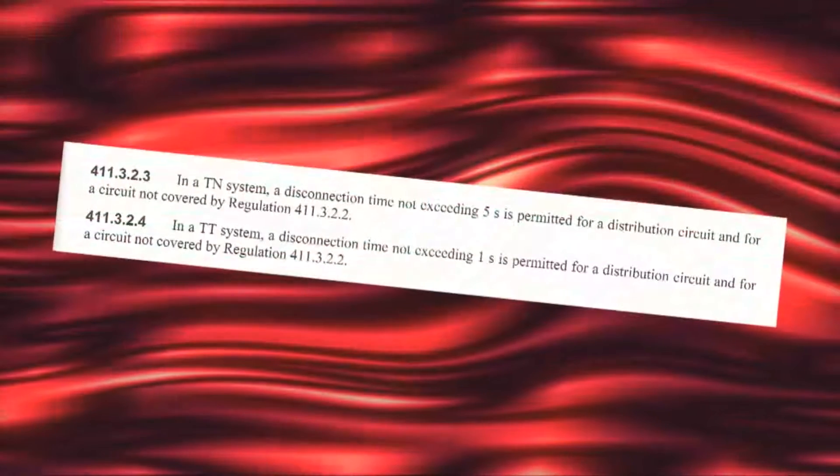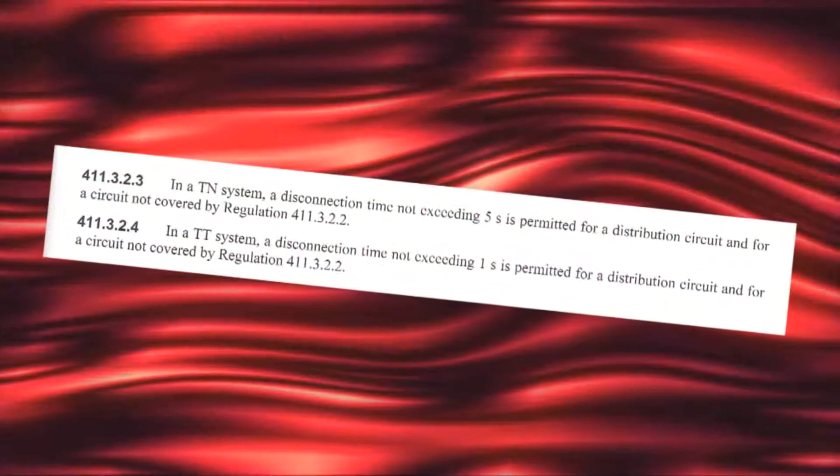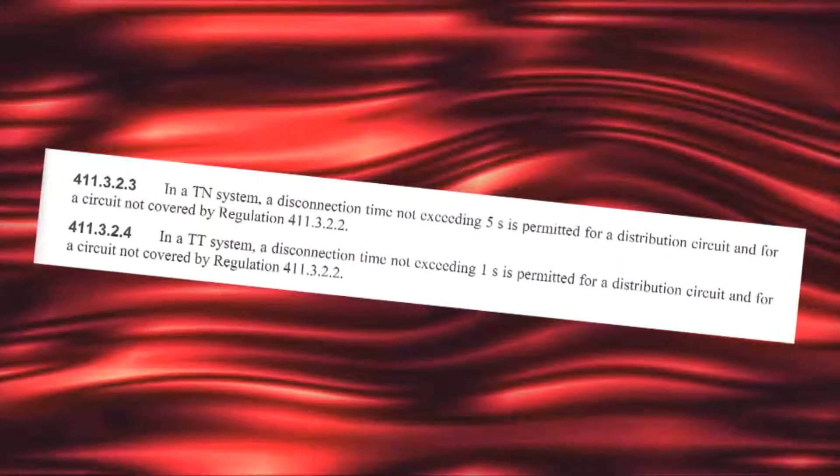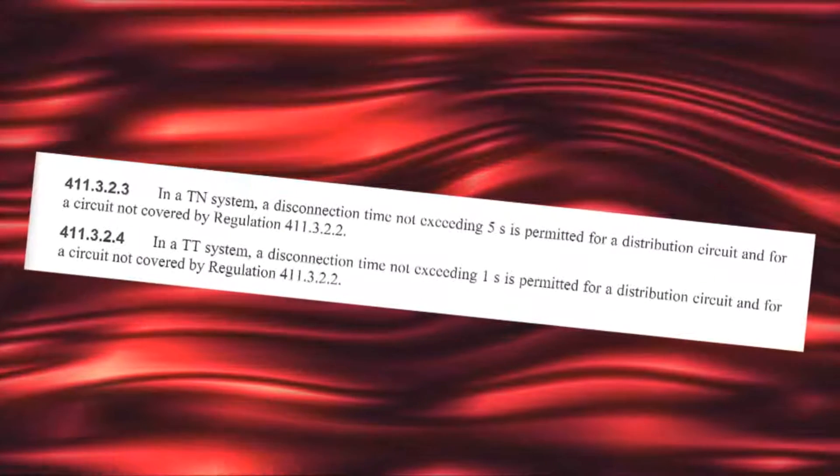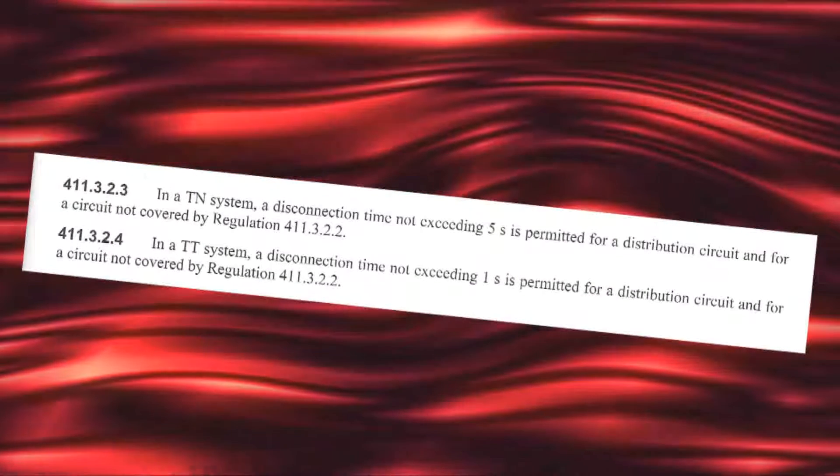For circuits rated at above 32 amps or distribution circuits, the regs do permit an increased disconnection time of 5 seconds on a TN and 1 second on a TT.